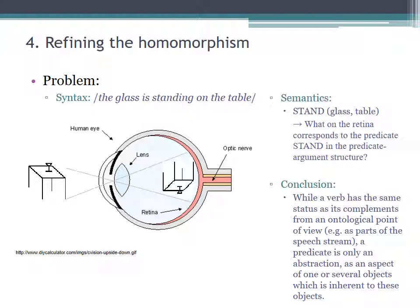Take again the utterance the glass is standing on the table. We can easily segment and classify the complements and the verb in that utterance. They are both material bits of the speech stream or mental representations thereof. When we look at the classical semantic side, we have a predicate-argument structure. Now, what on the retina corresponds to the predicate stand? The answer is nothing.